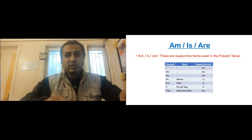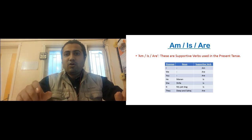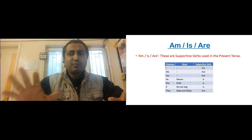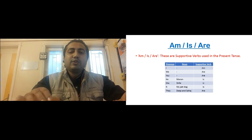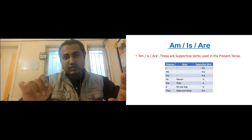Then next one, it. If it is it, or name of a thing, or name of one animal, or anything like that, for that we will be using is. It is. My pet dog is.